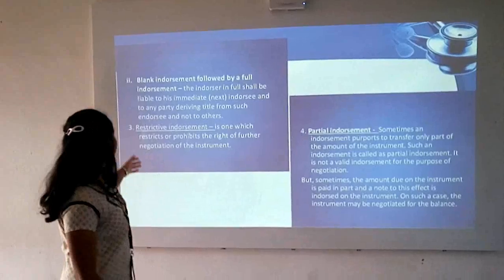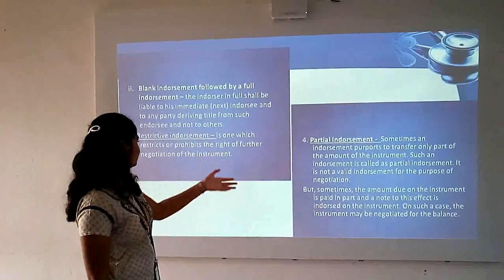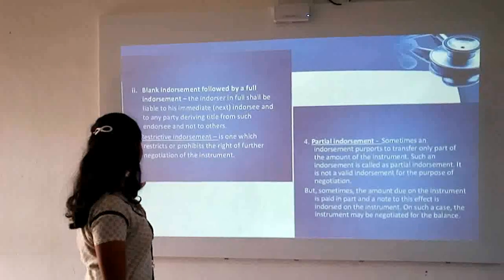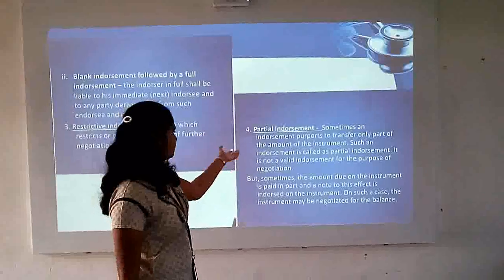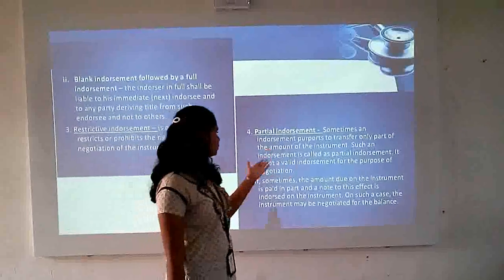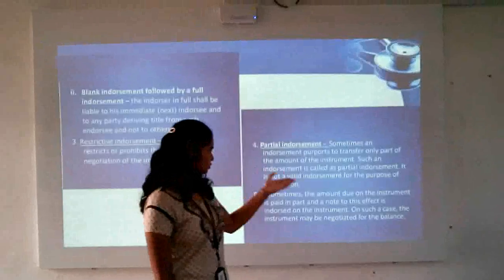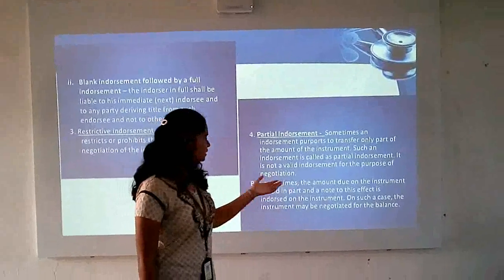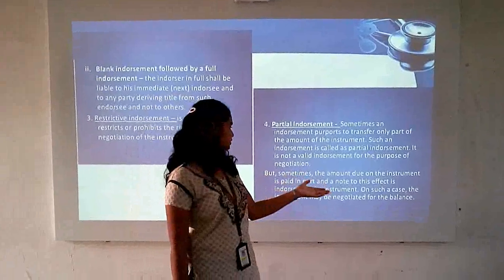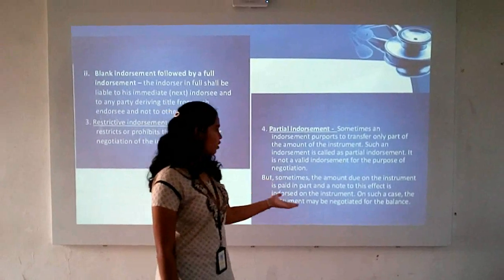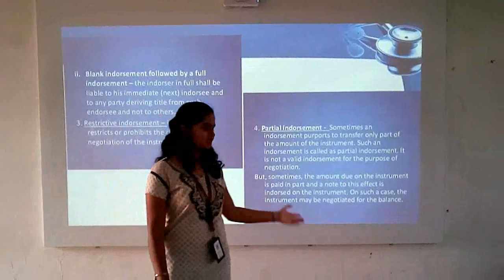The third type is restrictive endorsement, which restricts or prohibits the right of further negotiation of the instrument. The fourth type is partial endorsement. Sometimes an endorsement purports to transfer only part of the amount of the instrument. But where the amount of the instrument has been paid in part, it may be endorsed for the balance, and in such a case the instrument may be negotiated for that balance.